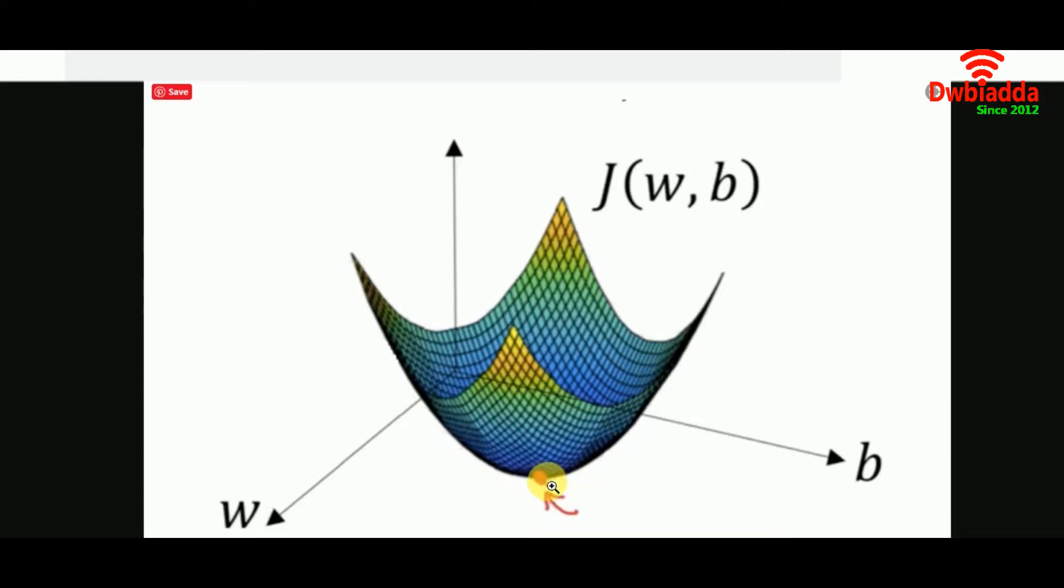Your machine learning model can have any error value starting from any point, and the objective is to get to that minimum error. To handle the same, your machine learning model can take various paths to it.